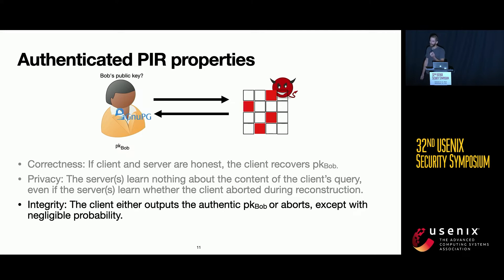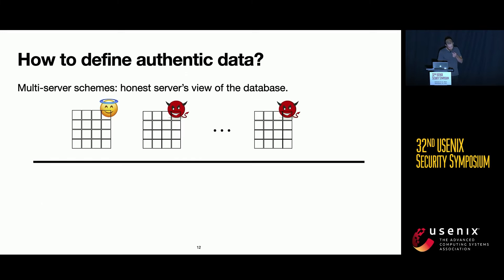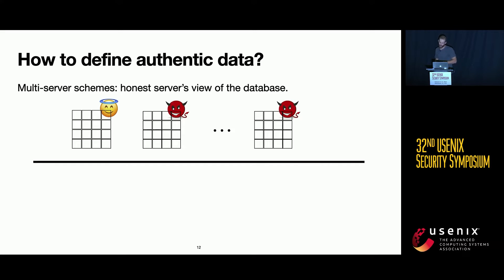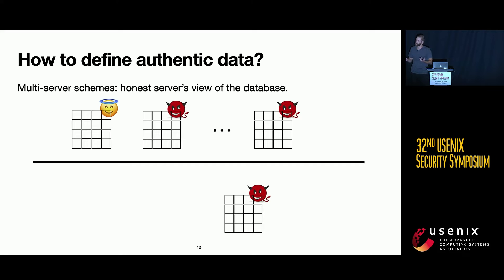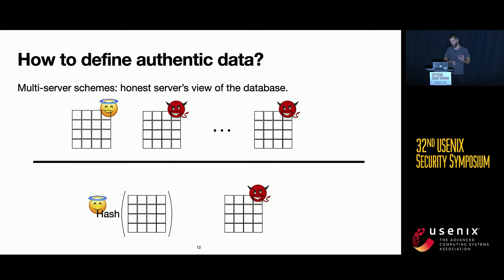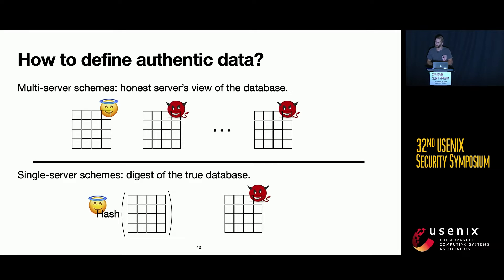The question is how do we define authentic data — what is an authentic record? In the multi-server setting, we have multiple servers each holding a replica of the database, where all but one are malicious and the honest one doesn't collude with the malicious servers. We can define authenticity as being the view of the honest server. In the single-server setting, we have a single potentially malicious server, so we define a record as authentic if we can compare it against a digest of the true database.